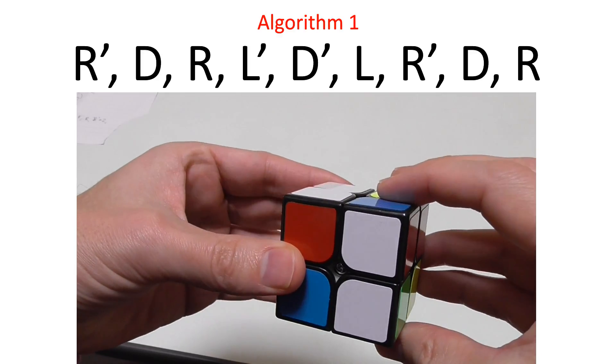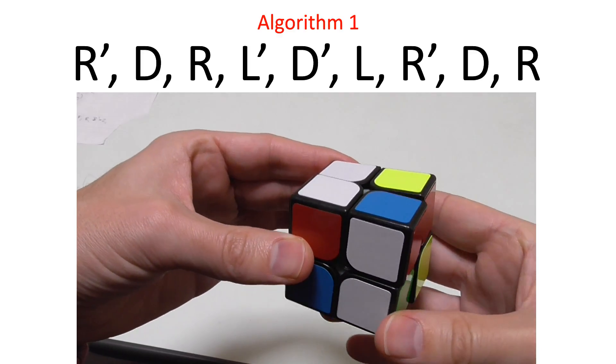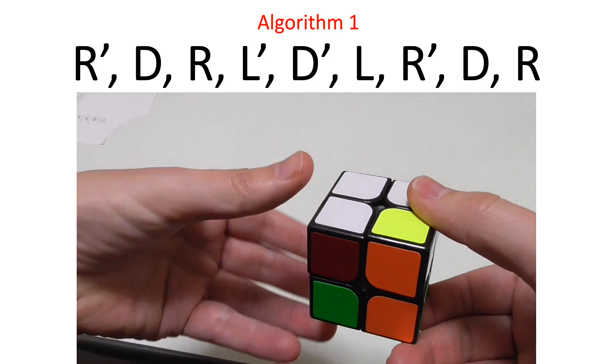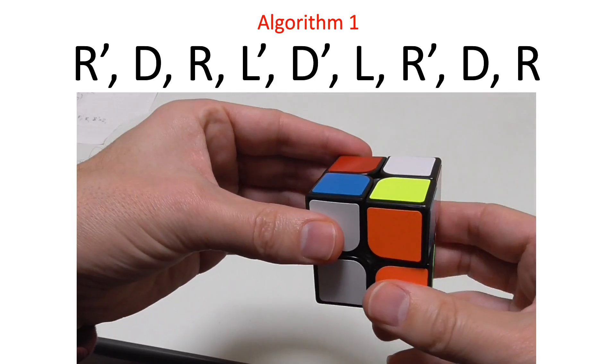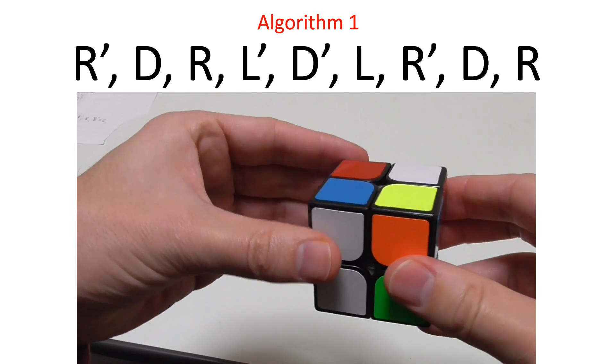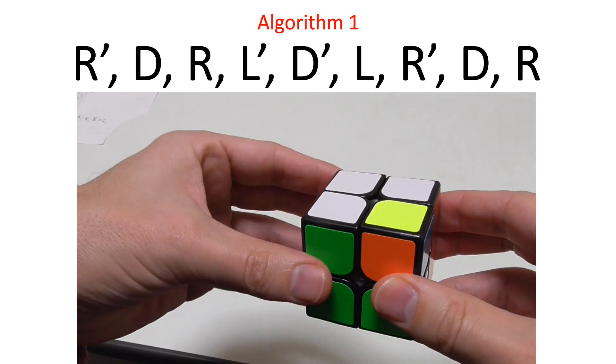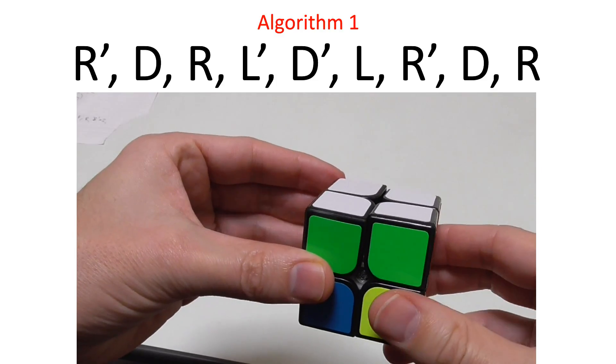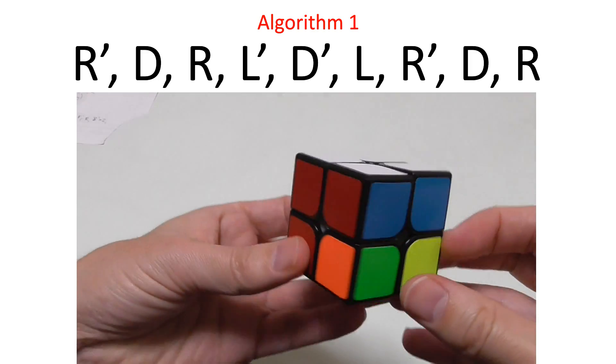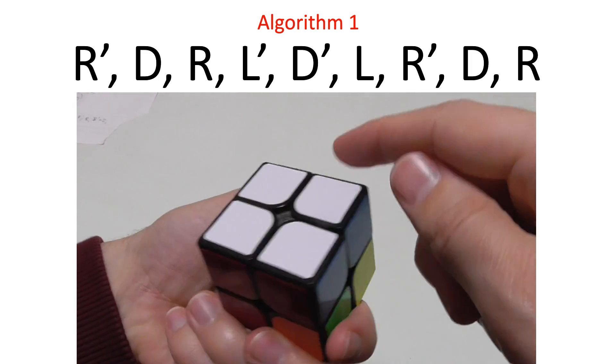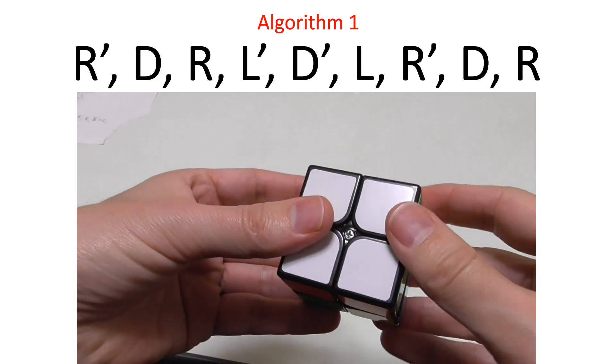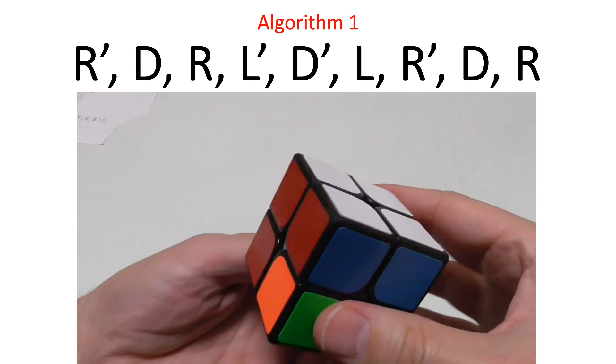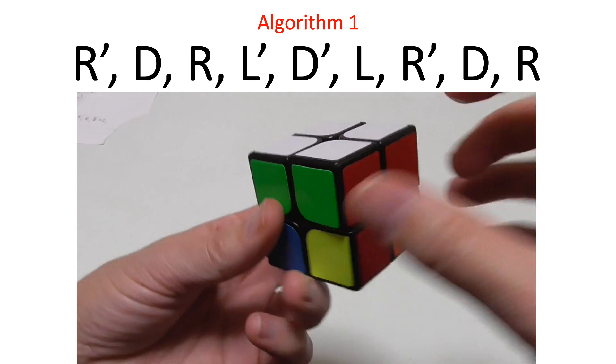Right invert, down, right, left invert, down invert, left, right invert, down, and right. And as you can see, that has sorted out the top layer. You may need to do it again, exactly the same algorithm. And before too long, you will have sorted out the first layer.